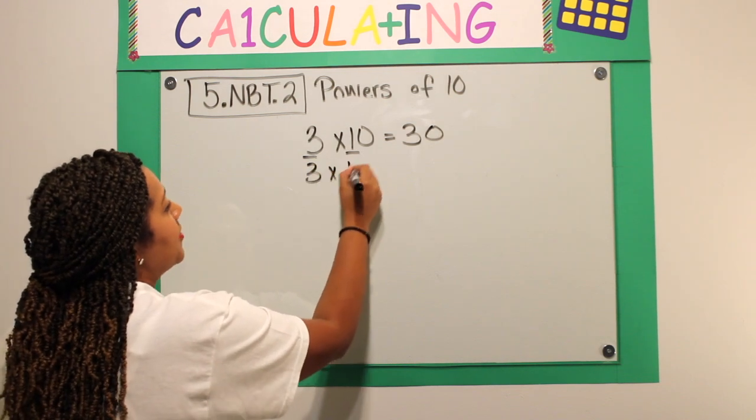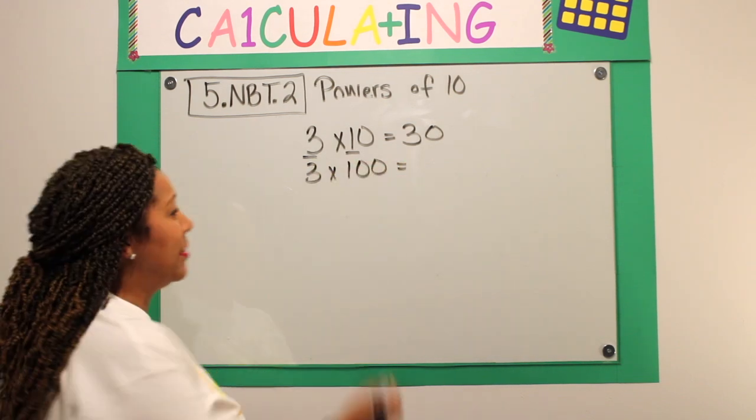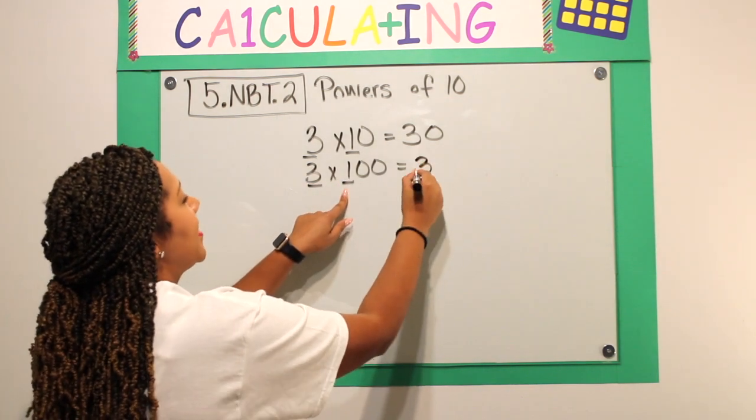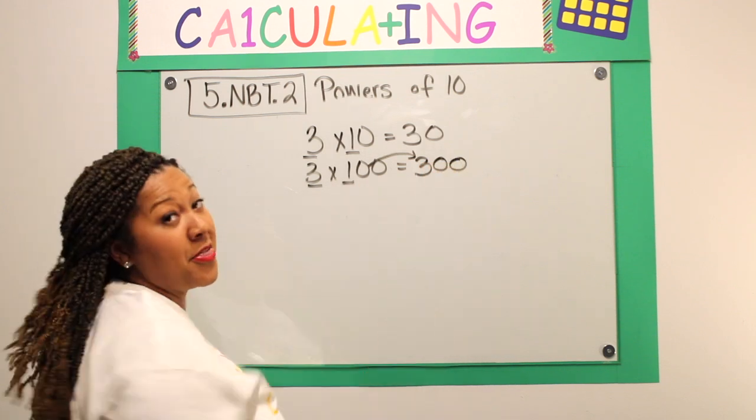3 times 100, I'm going to do the same thing. I like to say multiply the base. 3 times 1 is 3. And I'm going to add those two zeros. 300.